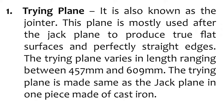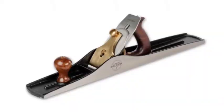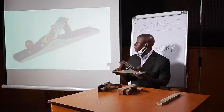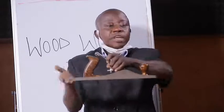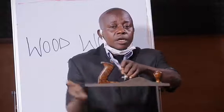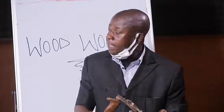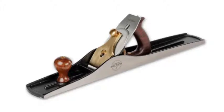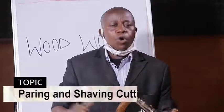The trying plane is mostly used after the jack plane to produce a true or flat surface and perfectly straight edges. The trying plane varies in length, ranging between 457 millimeters and 609 millimeters. It is made of metal with wooden handles, just like the plane I showed you. All member parts are the same as the parts I listed. The trying plane is the longest of all bench planes, and its length is measured from the sole. On the board, this is an example of the trying plane.